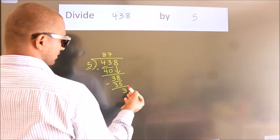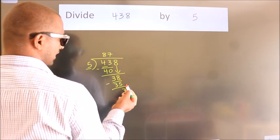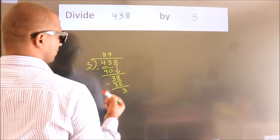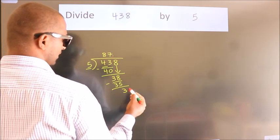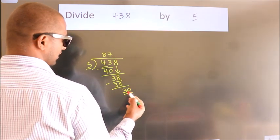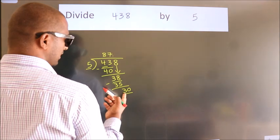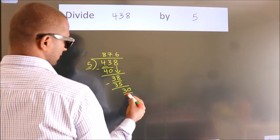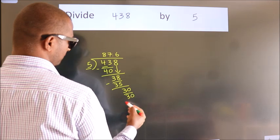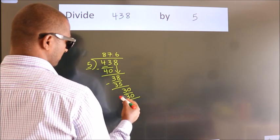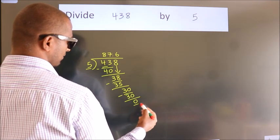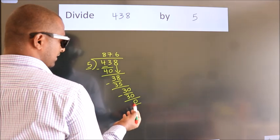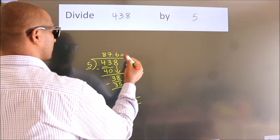After this, no more numbers to bring down. So what we do is we put a dot and take 0. So 30. When do we get 30 in the 5 table? 5 times 6, 30. Now we subtract. We get 0. We got remainder 0, so this is our quotient.